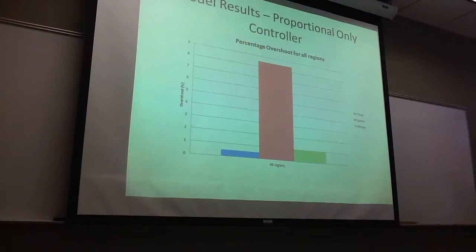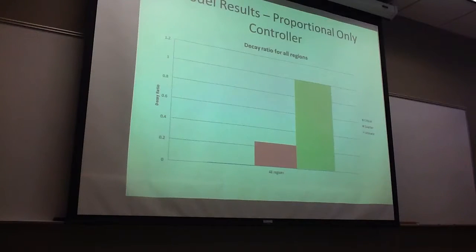And so it's one of the characteristics of an underdamped response. For the decay ratio, the ultimate region has a decay ratio of 1, because the first peak divided by the second peak is equal to 1 because they're at the same time.